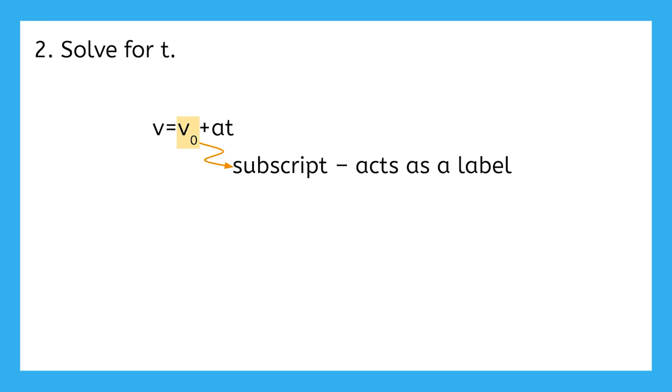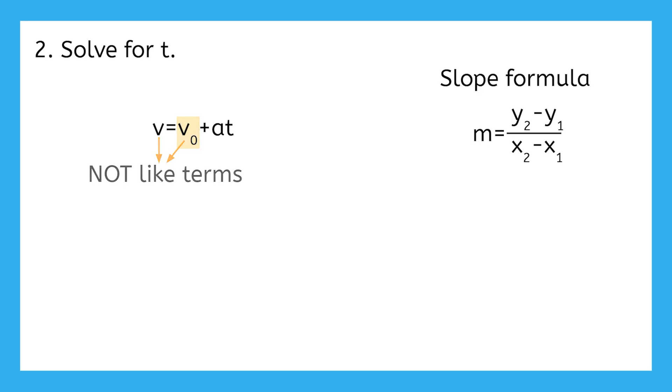This equation right here is actually used in physics, and V and V0 each represent different velocities or speeds of an object. And since they represent different speeds, they are not like terms.